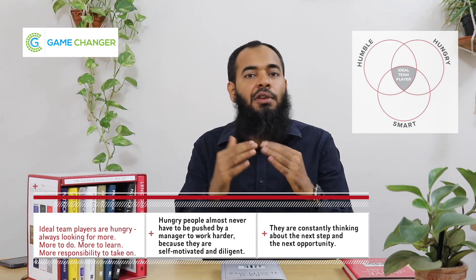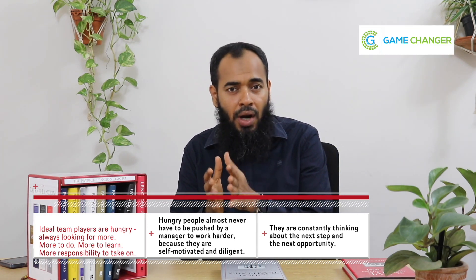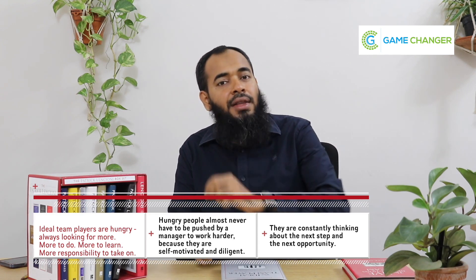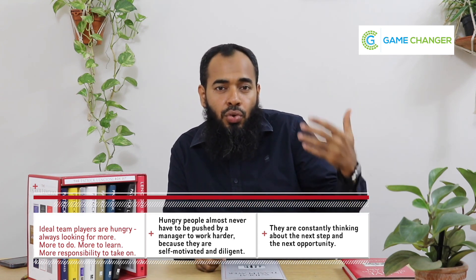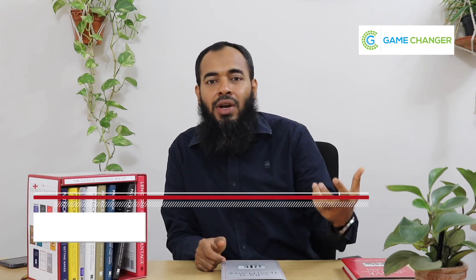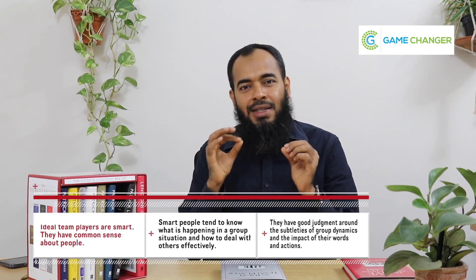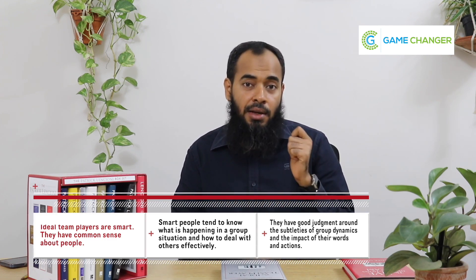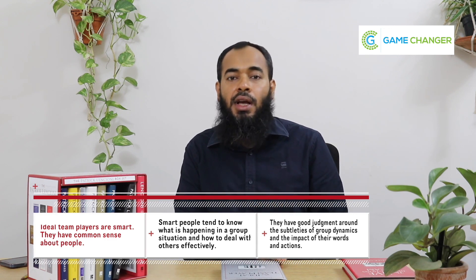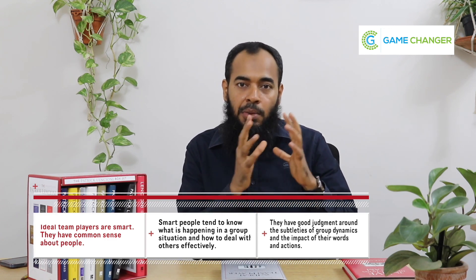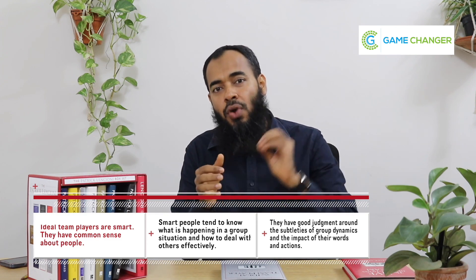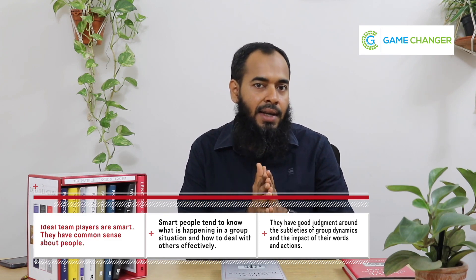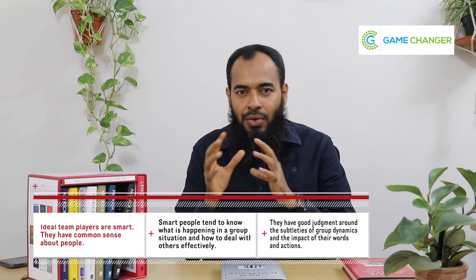An ideal team player with the right level of hunger, once they finish their assigned work, would look around and ask how they can help others. Then there is being smart, which is partly about emotional intelligence — having common sense, being comfortable in different situations, being able to work with different people, understanding situations, knowing where to say what. Those subtle nuances — that's what being smart is about.